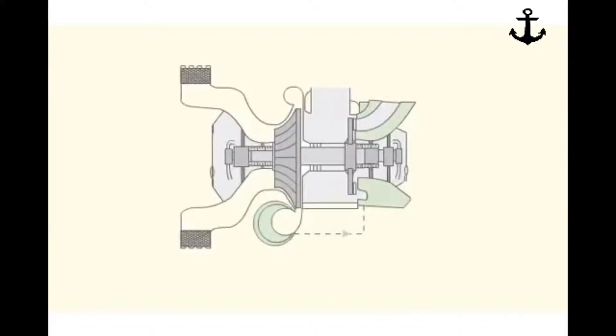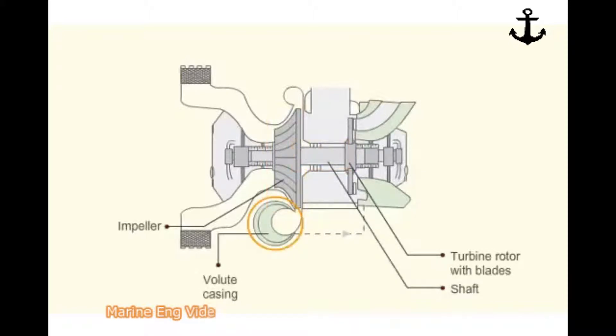The sketch shows a typical turbocharger fitted in large slow-speed engines. The main parts are the turbine rotor with blades and the impeller mounted on a common shaft enclosed in a volute casing.